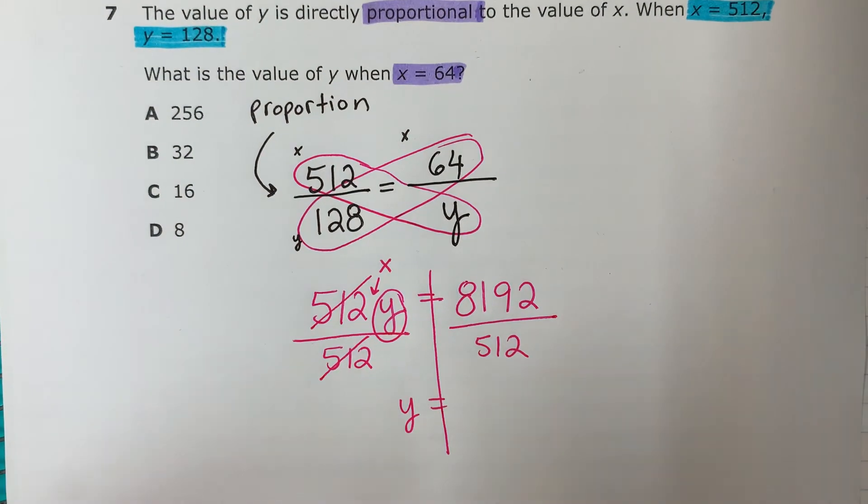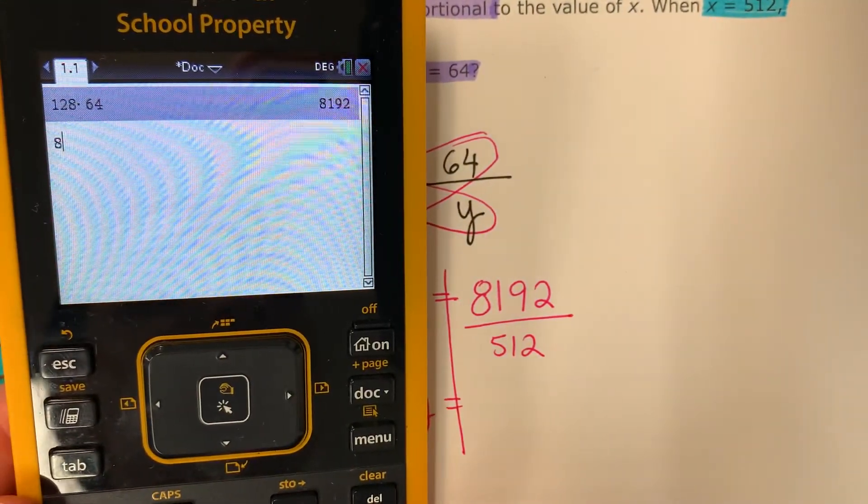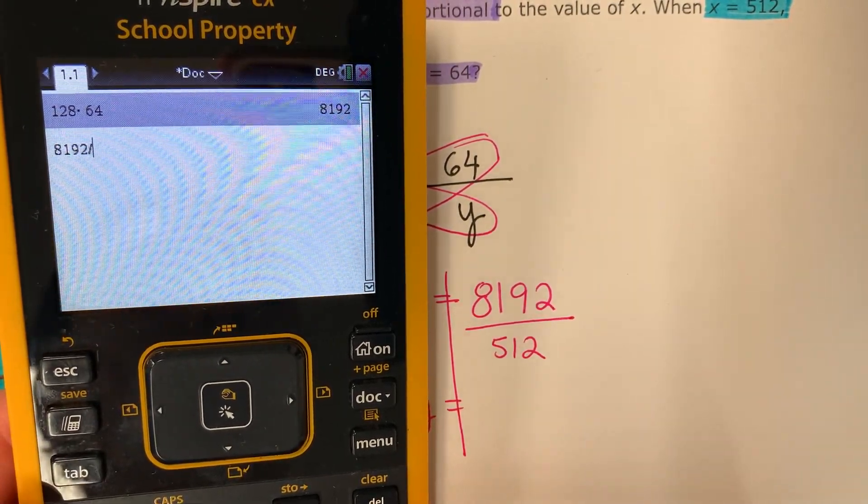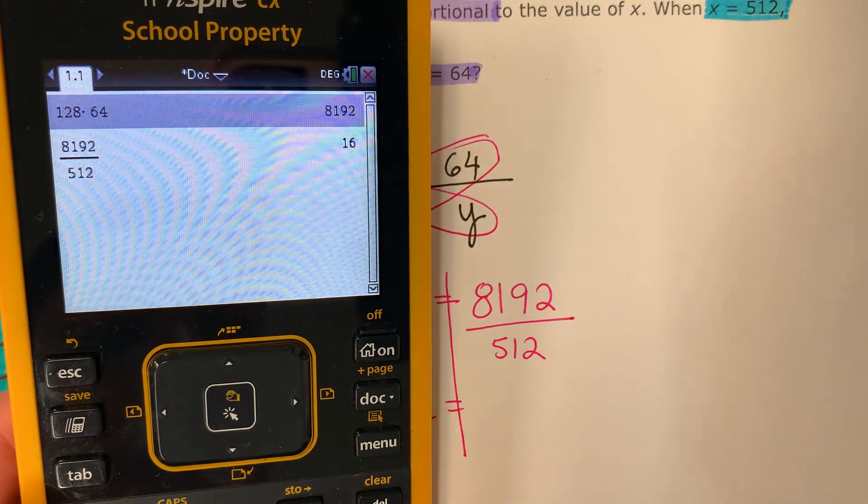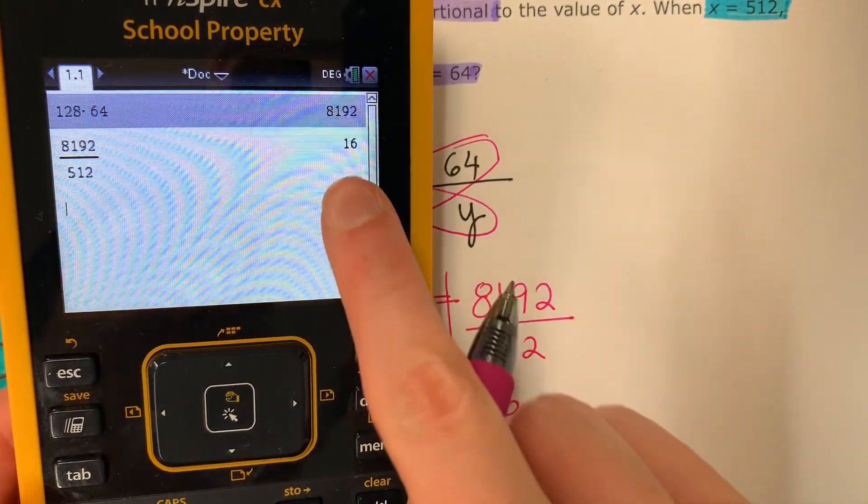Let's put that in the calculator. 8,192 divided by división 512. 16.